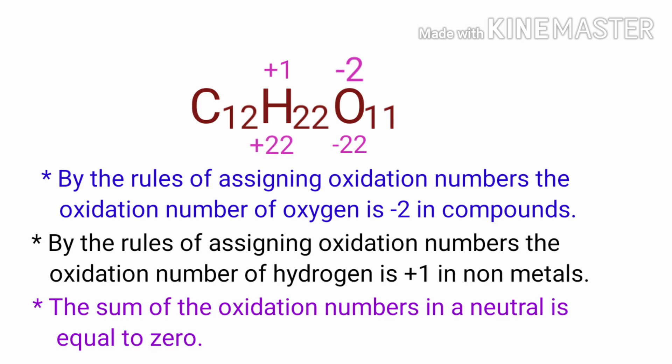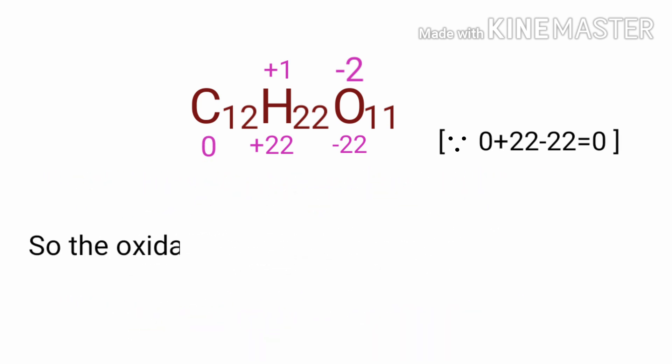As per rule in a neutral compound, the numbers along the bottom must add up to 0. So the number under C must be 0. So the oxidation number of carbon in sucrose is 0.